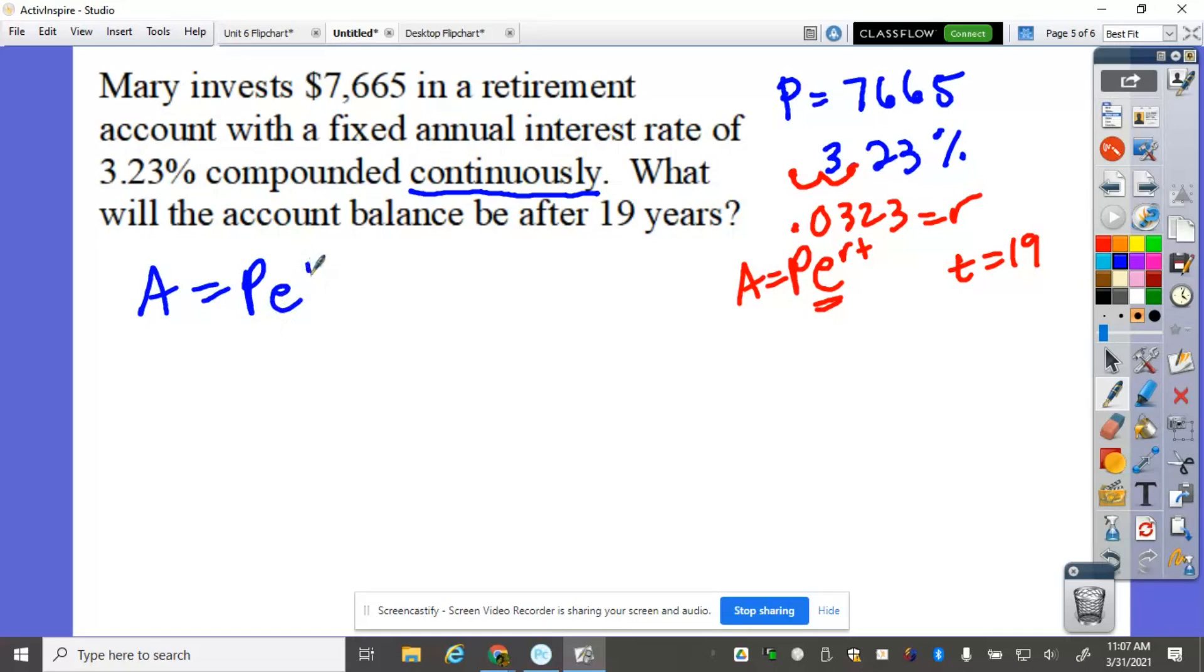So using the APERT, and we're looking here for the final amount, the initial is 7,665, E raised to the power of 0.0323 times 19.